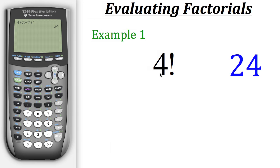So if we want to find 4 factorial, we would first press 4 and then go to Math. And then we need to get over to the Probability tab, so we'll scroll over to there.